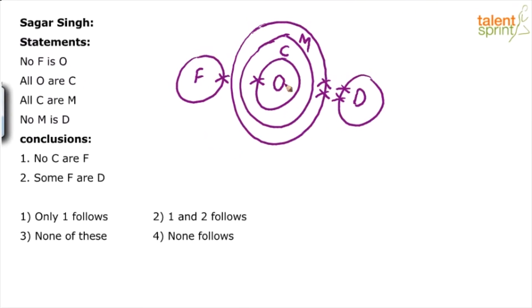So no F is O, these two cannot touch each other. All O are C, then all C are M, and then no M is D. M and D cannot touch each other. Now look at the conclusions. The first one here: No C are F.